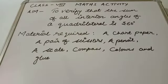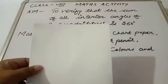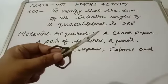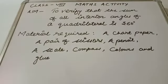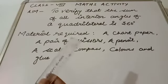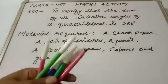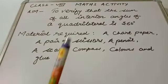For this activity, materials we require are a chart paper, a pair of scissors, a pencil, a scale, a compass, different colors, and glue.